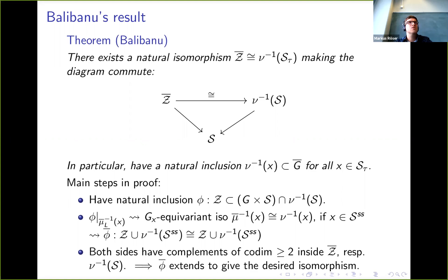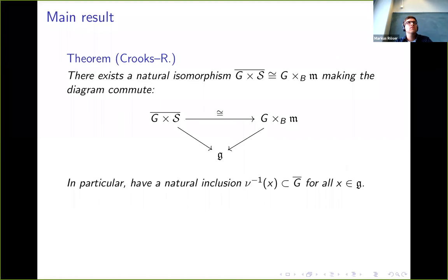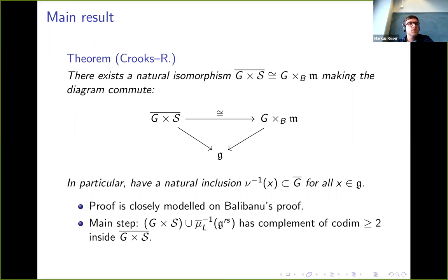In the last three minutes or so I can now come to our main result, which is basically a sort of analog of her result for our space G×S̄. It turns out this is actually isomorphic to the standard family of Hessenberg varieties in the same way as Balibanu's isomorphism between the universal centralizer and the Poisson slice. So a particular corollary of this is that now we get actually an embedding of the Hessenberg variety associated to any x, not just regular x. Our proof is basically modeled on her proof.